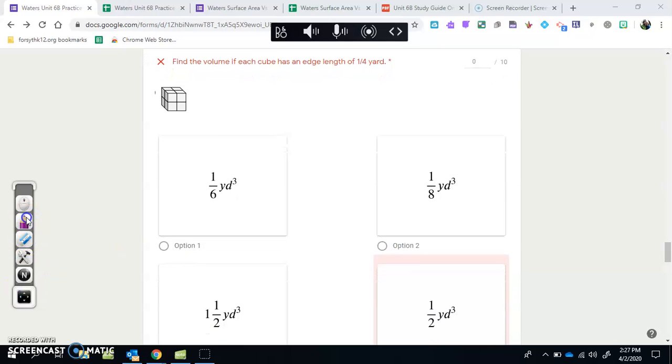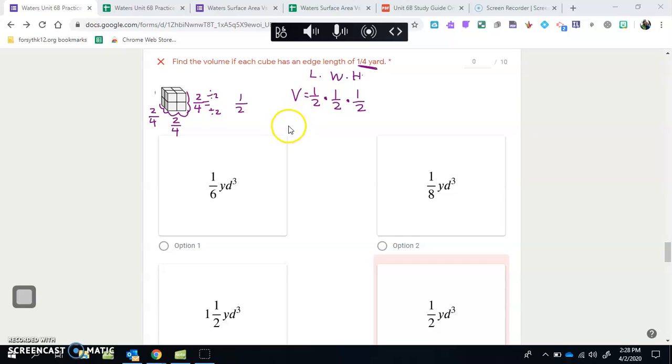Now this one says find the volume if each cube has an edge length of one-fourth of a yard. So this is one-fourth, two-fourths - we have to count by fourths. This is one-fourth, two-fourths, and how far does it go back? One-fourth, two-fourths. So our length, width, and height is all two-fourths. Now can two-fourths be simplified? Yeah, we can divide both the bottom and top by two, and we get one-half. So volume equals one-half times one-half times one-half. The other problem students have been doing is instead of multiplying, they've been adding. Let's multiply across the top: one times one times one is one. Then two times two is four, four times two is eight. Some people accidentally chose one-sixth, but it's one-eighth.